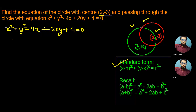First, we keep x² and -4x together. We will do the same with y² + 20y, and write the remaining as +4 = 0.